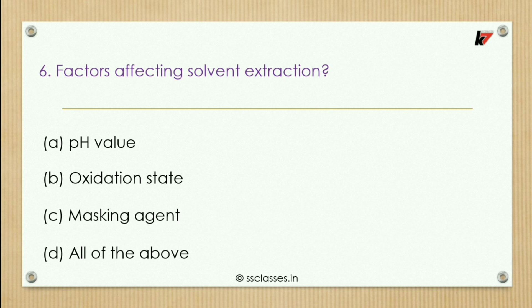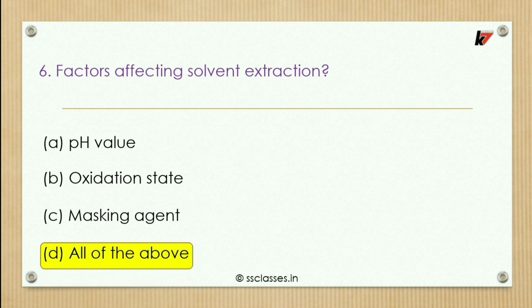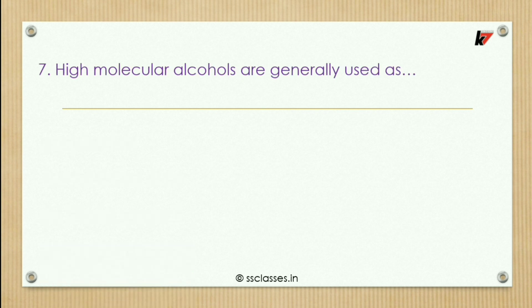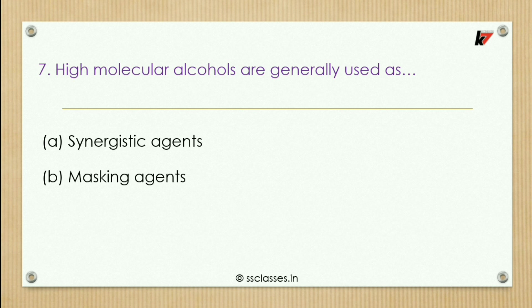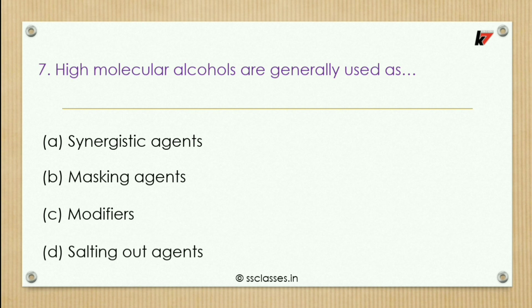pH value, oxidation state, and masking agents all affect solvent extraction, therefore the correct answer is all of the above. Seventh question: high molecular alcohols are generally used particularly in solvent extraction as — options: synergistic agents, masking agents, modifiers, or sorting out agents. The correct answer is modifiers.